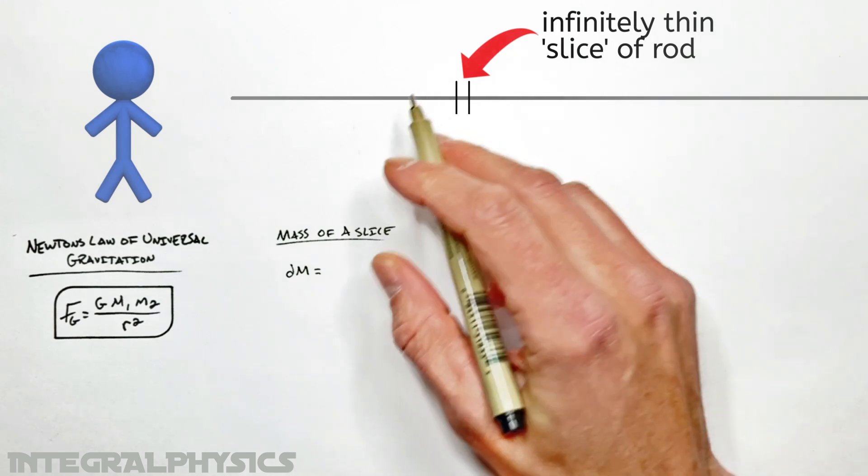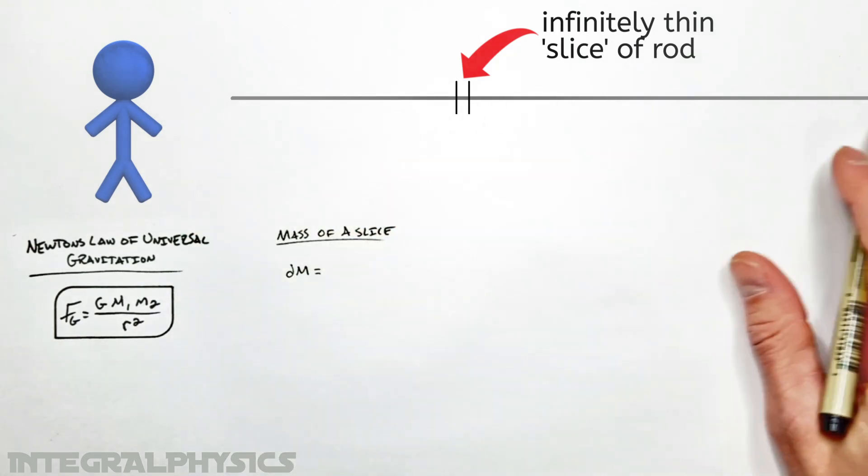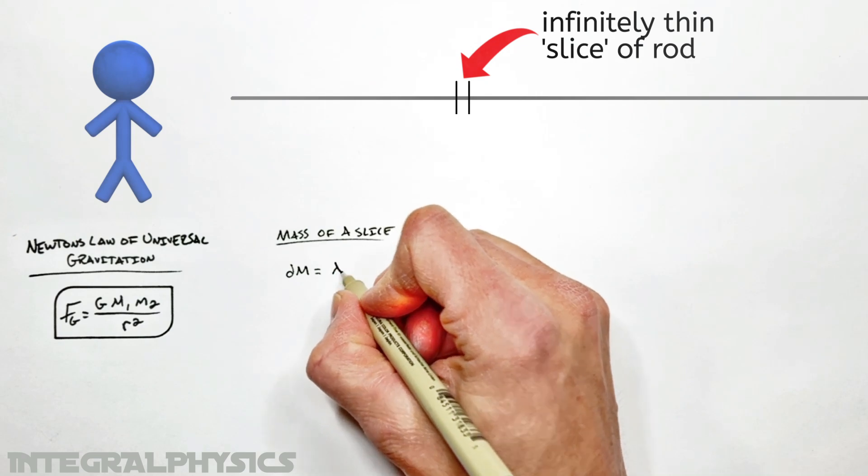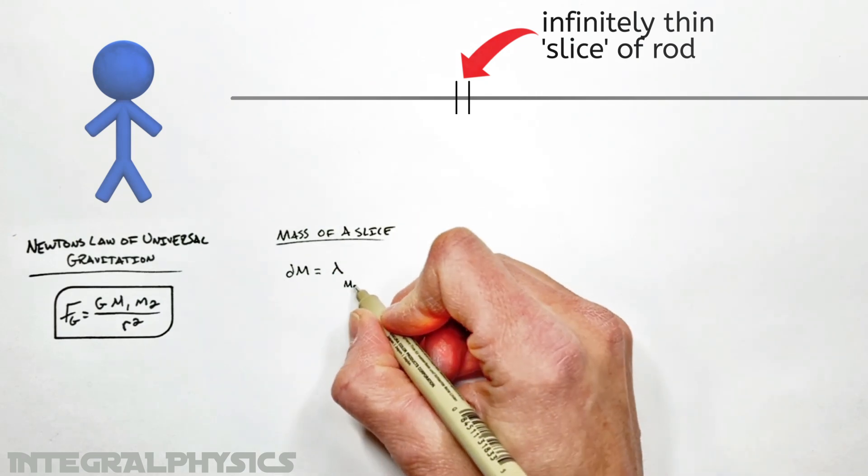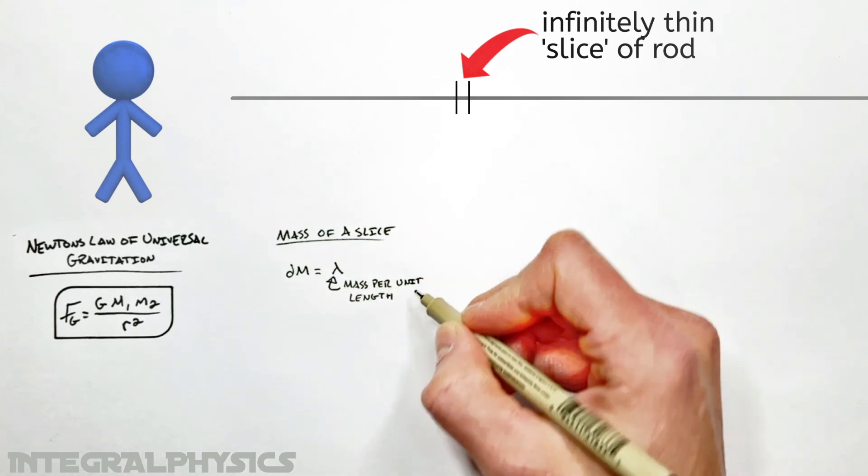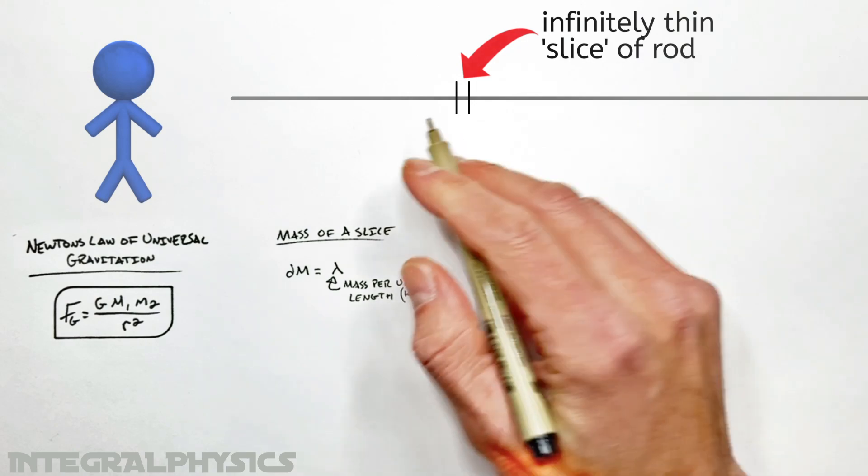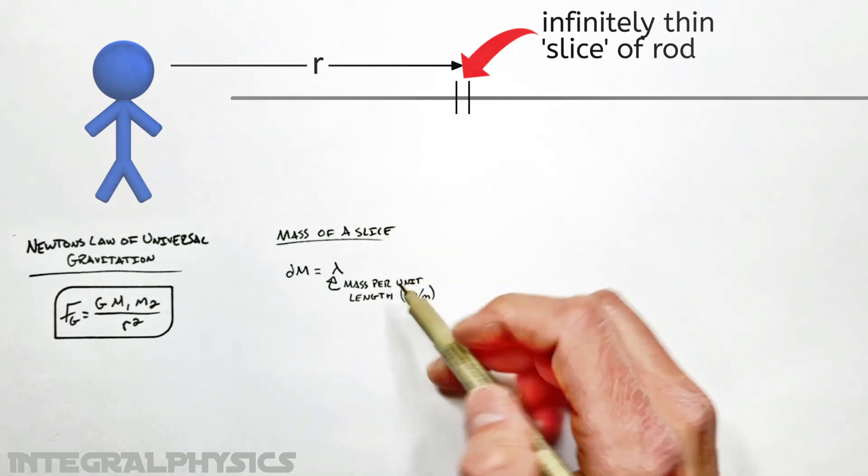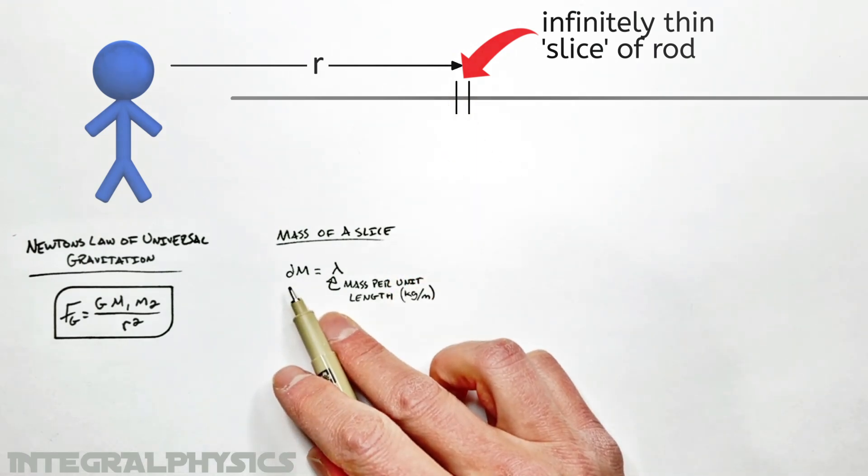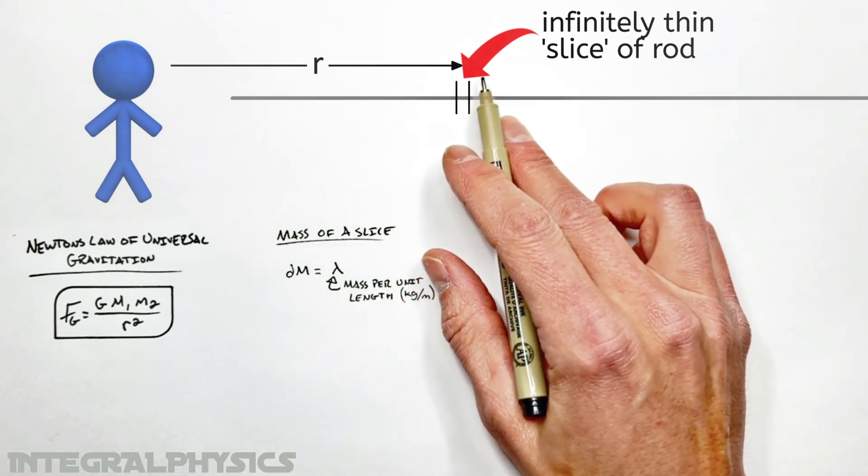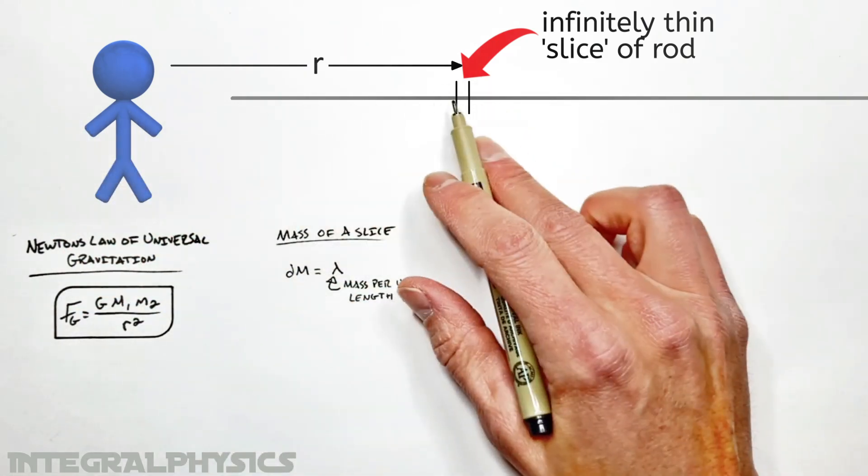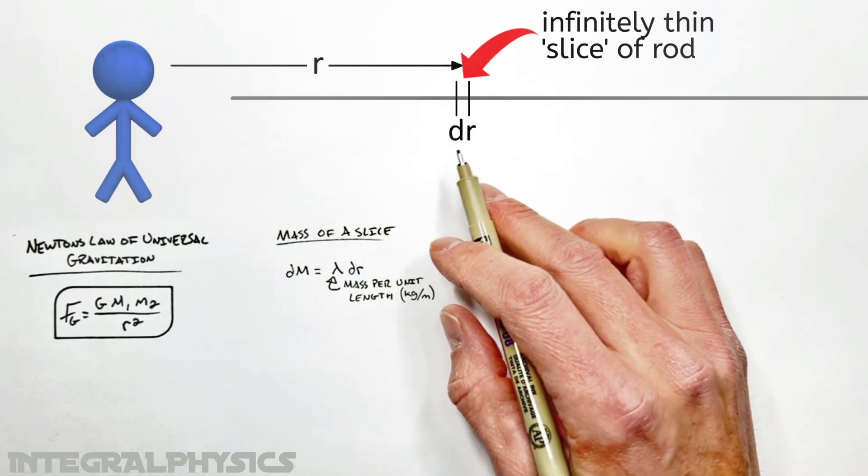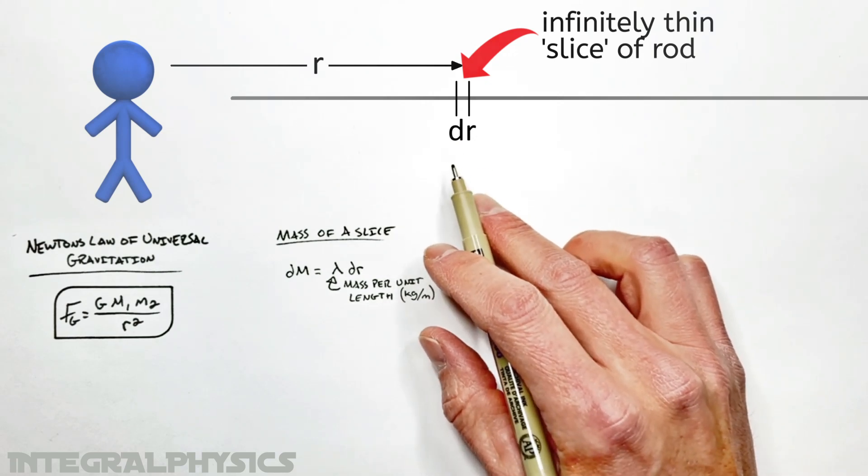And that mass is actually going to be a function of really how dense this rod is or really how much mass it has per unit length. We're going to show that using the Greek letter lambda. And that's going to represent the mass per unit length of a rod. That's something you'd measure in kilograms per meter. Now our little slice right here is some distance r away from this particle. And the slice actually has a length. So if we can multiply the mass per unit length times the length of this slice, that'll give us the total mass. Now the length of this slice is an infinitely small change in r. So I'm going to call that dr. That is to say our little slice is infinitely thin. It doesn't have a thickness of zero. It has some thickness. It's just infinitely small.